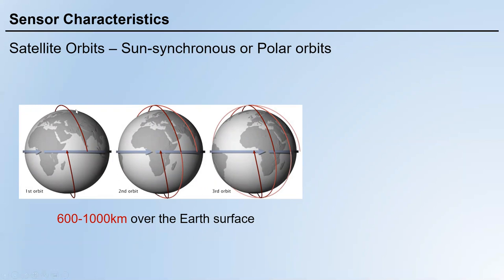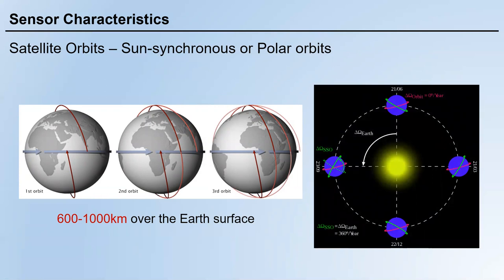There is always a non-zero angle between the plane of the orbit and the axis of the Earth. Sun-synchronous or polar orbits are usually 600 to 1,000 kilometers over the Earth's surface. A satellite using polar orbit will fly over both poles — that's why it's called polar orbit.